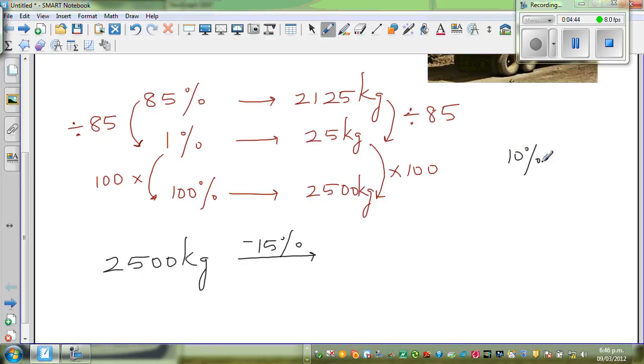10% is how much? 10% of 2500 is 1/10th of that. So 1/10th of 2500 kg is 250 kg. So if you know 10%, I can find easily 5%, which is half of 250, which is 125. So I can say 15% is 375 kg.